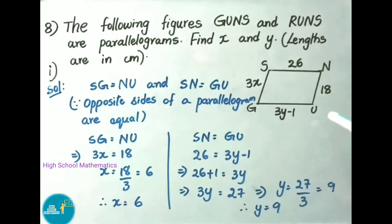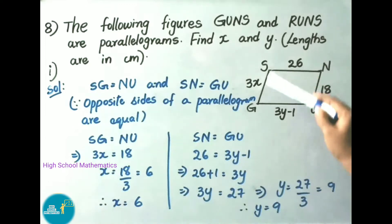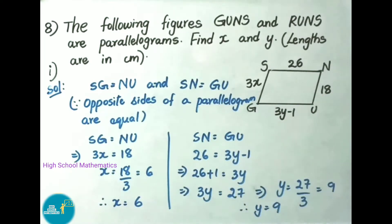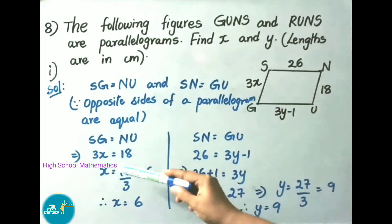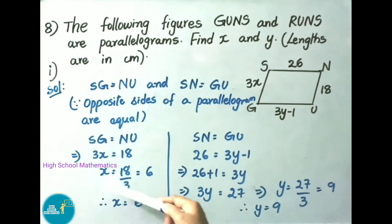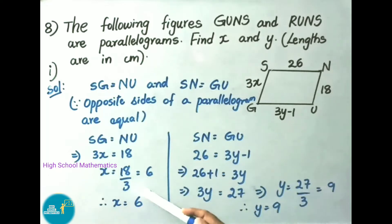Observe the first sum: parallelogram GUNS (G-U-N-S). Here SG equals NU and SN equals GU because opposite sides of a parallelogram are equal. Taking the first pair: SG equals NU, SG is given as 3x and NU is given as 18 centimeters. So 3x equals 18, therefore x equals 18 divided by 3, which is 6.